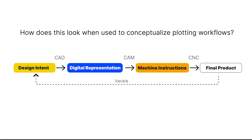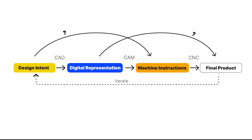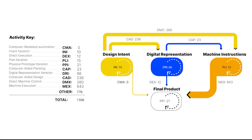To answer our research questions, we investigated how the canonical workflow steps could be applied to plotting workflows and identified areas where they failed to capture the activities happening on Plotter Twitter. We developed a coding scheme to categorize workflow steps and applied this coding scheme to tweets we collected using the Twitter streaming API.